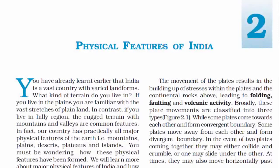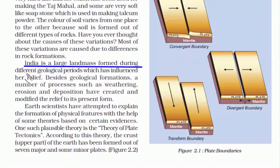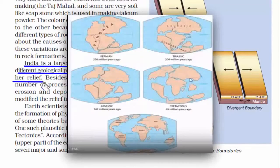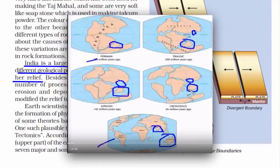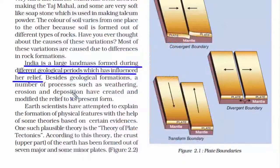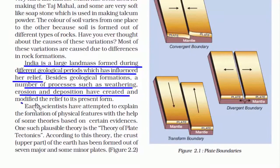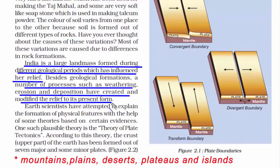In this chapter we will read about our country's physical features: mountains, plains, deserts, plateaus, and islands. We will also know how they have been formed. India is a large landmass formed during different geological periods. It broke apart from the Australian plate and moved towards the Eurasian plate, going through constant physical changes. Processes such as weathering, erosion, and deposition have created and modified the relief to its present form.